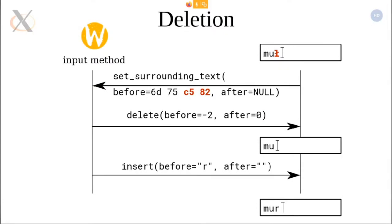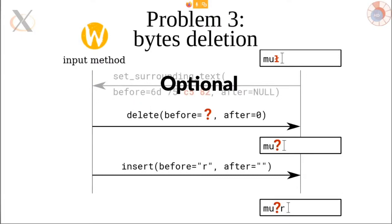Another problem is related to text-input, the core protocol, and it's about deletion. If we want to delete a character, the application tells us what's already written in the text field so we can count bytes and delete as many as needed. But the application is not forced to provide what the text field contains because I made it optional in the protocol — so we don't always know how many bytes to delete and can't delete things properly. This is being fixed in the next revision.